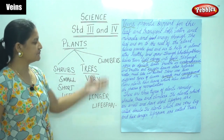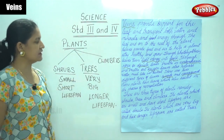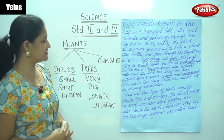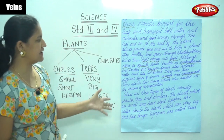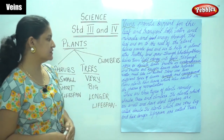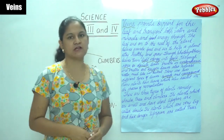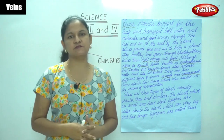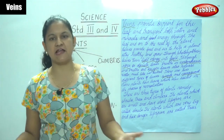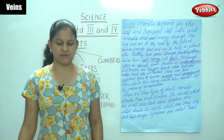So these are the functions of the leaves, the veins, and the types of plants — that is your shrubs, your trees, and your climbers.